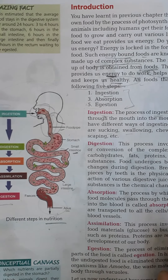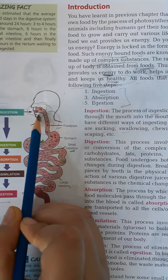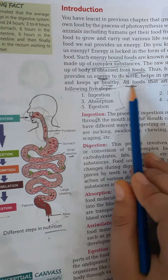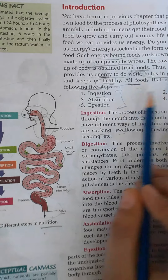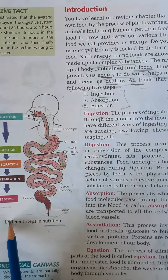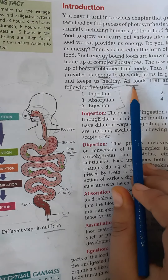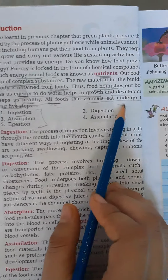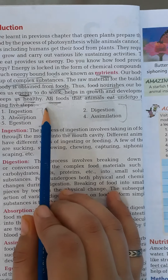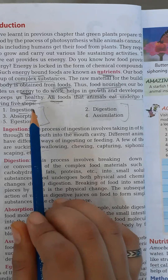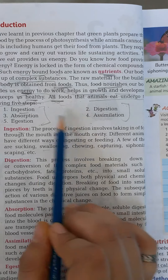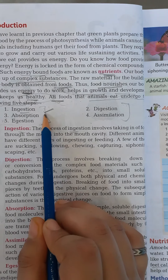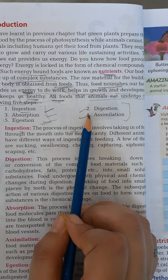As you can see in that picture, all foods that animals eat undergo the following steps. First is ingestion, second is digestion, third is absorption, and fourth is assimilation.